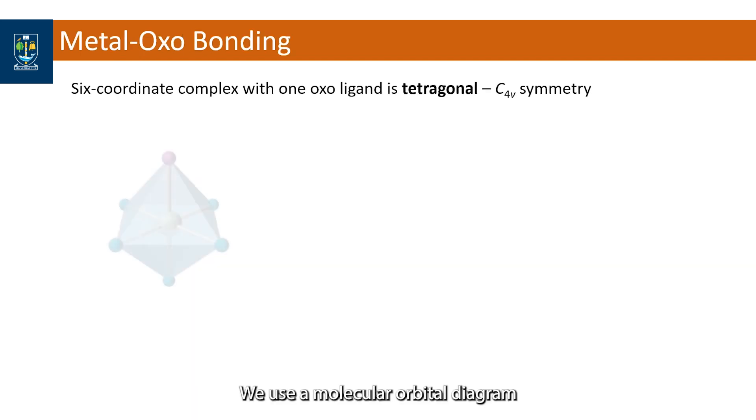We use a molecular orbital diagram to describe the bonding in a metal oxo unit. A six coordinate complex with one oxo ligand has tetragonal geometry and C4v symmetry.